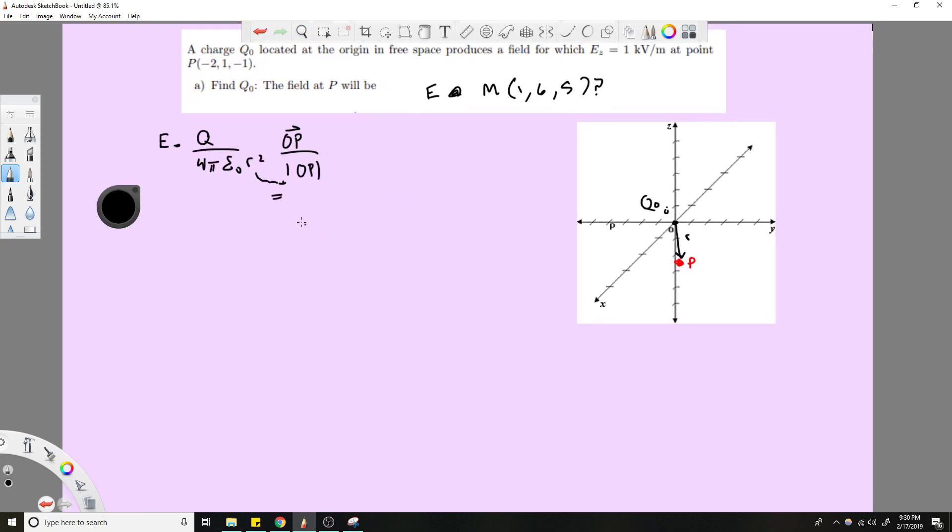So let's solve for that value first. So R would equal, well first let me back up a second. Let's find this vector OP. So vector OP would be equal to P minus the point O, which we're calling O, which is at the origin, so that's just negative 2 minus 0 is negative 2, 1 minus 0 is 1, and negative 1 minus 0. So it's just basically the vector, this P value, same values in vector format.